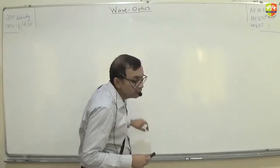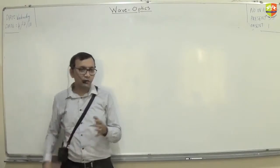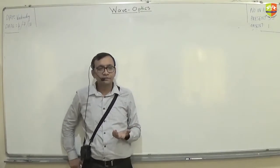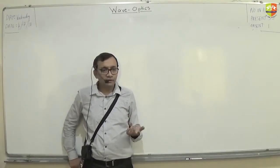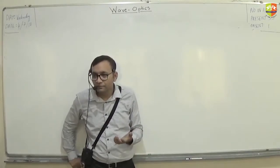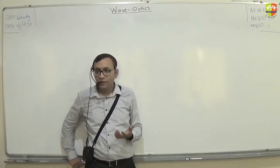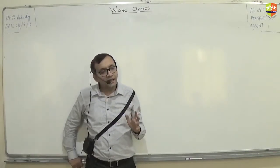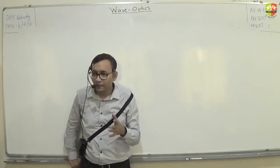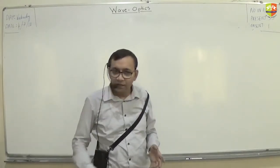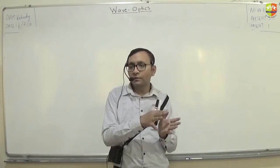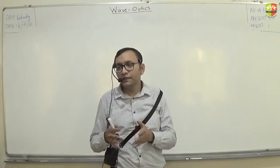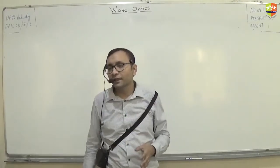We are now going to take a scenario where two waves meet. Have we learned about this scenario earlier? We have learned about it — this is called interference. We are going to learn about interference in light, which is exactly the same as what you have learned in class 11. And we are going to learn about how this concept can be used in an experiment like Young's double slit experiment.